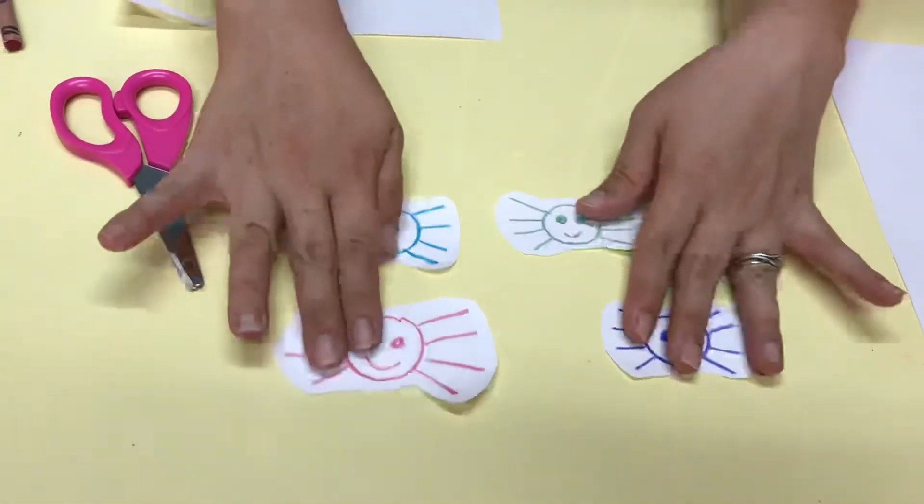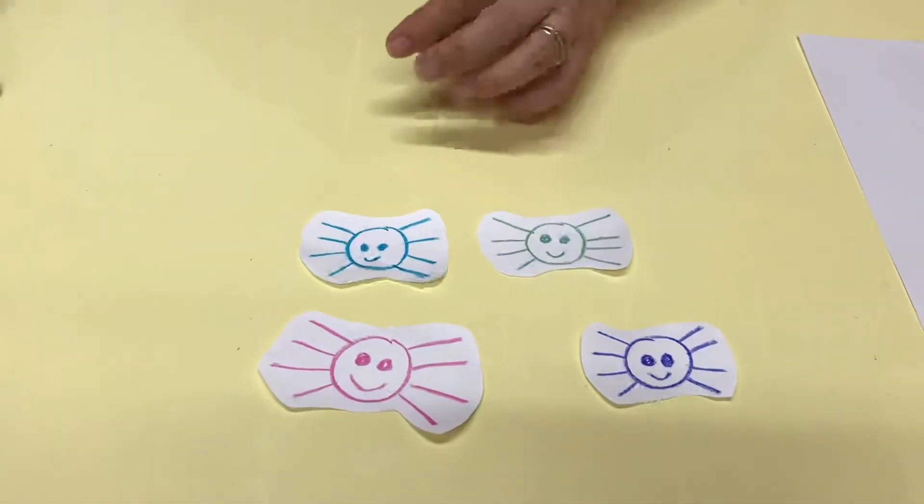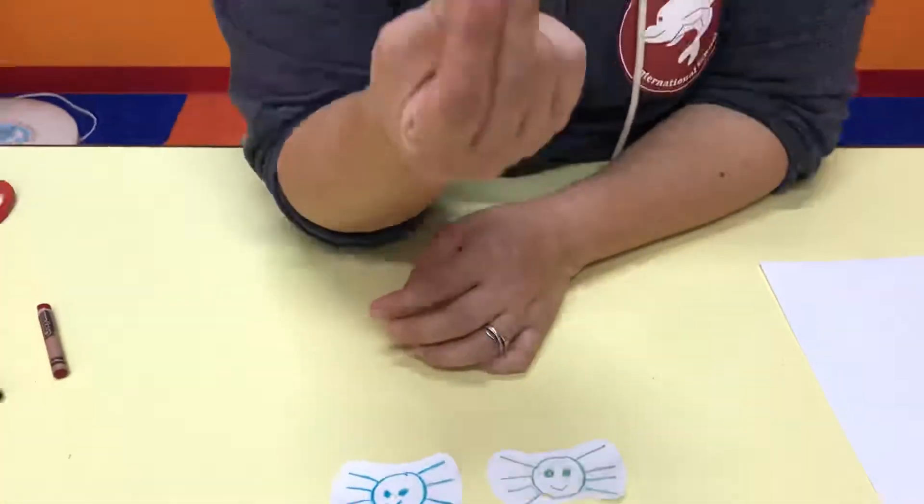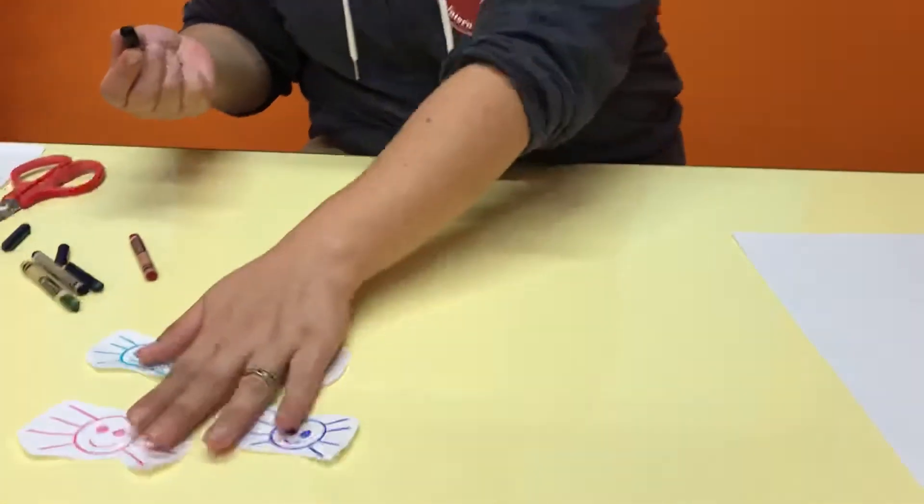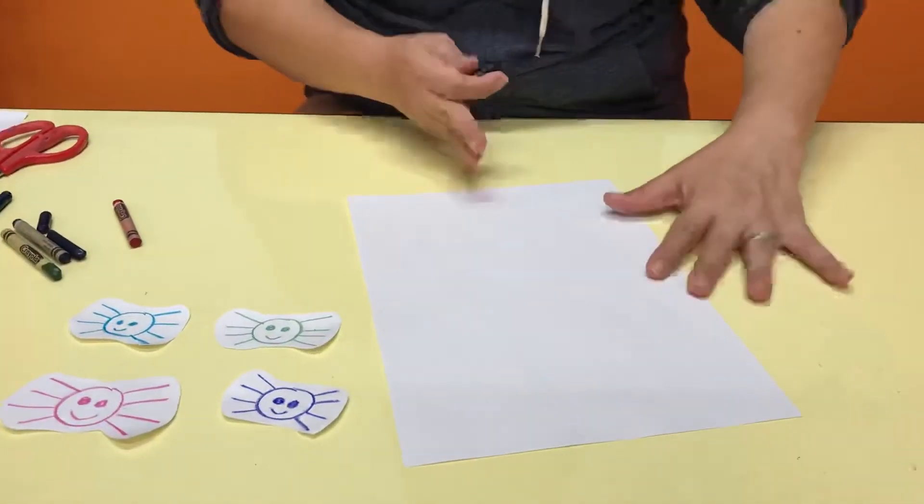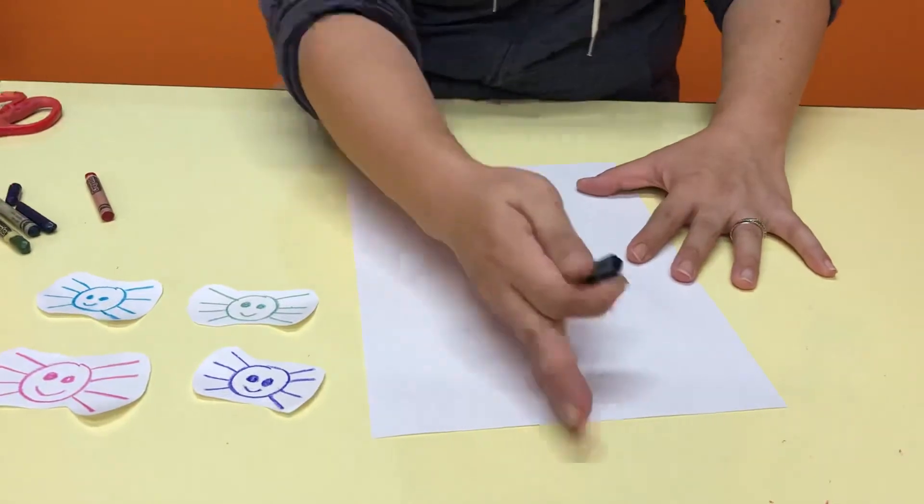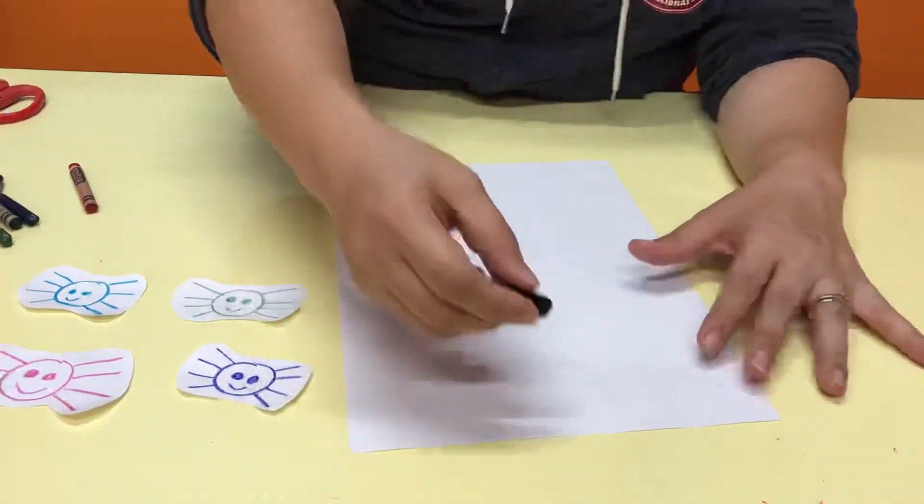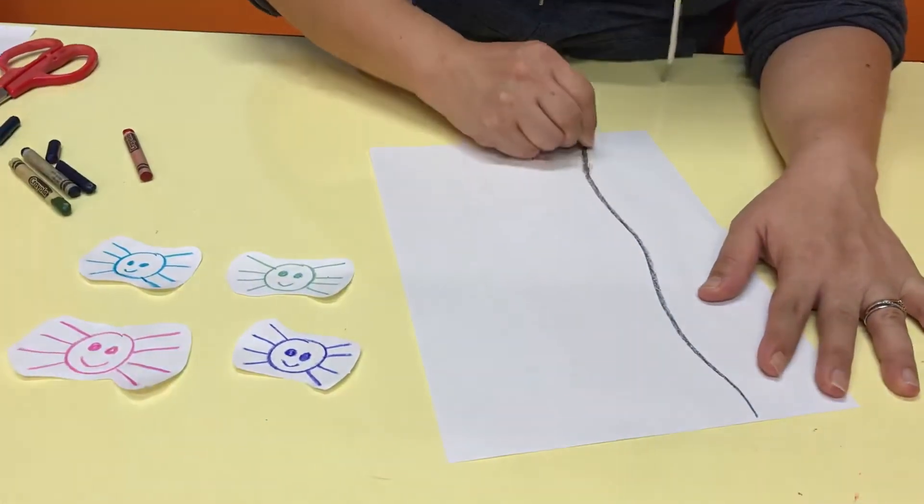Now get your black crayon, or if you have any dark crayon. We are going to make a road where the spider can run. So if you look here, let's make a simple one, an easy one. A little bit straight. There you go. This is for the spider run.